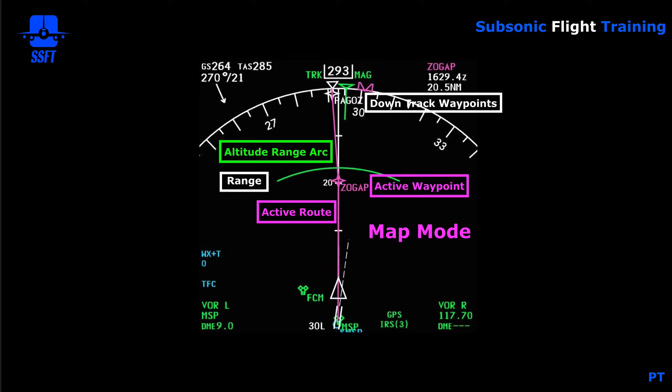The range is shown in the middle of the ND. In the expanded mode, half the selected range is shown. In this case we're in the 40 nautical mile range, and 20 nautical miles is shown in the middle. Index marks below and above the 20-mile arc represent 10 miles and 30 miles, with the top being 40 miles.